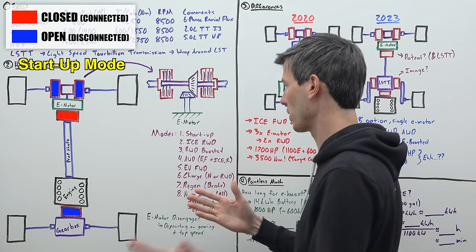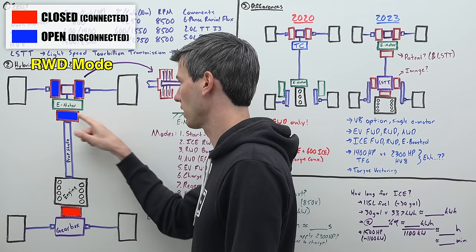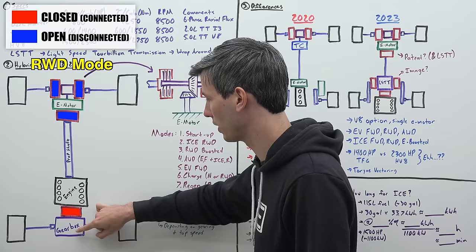Then we can switch over to rear wheel drive combustion mode. So we're going to disconnect this clutch, we're not using our electric motor, our engine is then going to be connected through the gearbox with this clutch engaged and now we're sending power to the rear wheels.